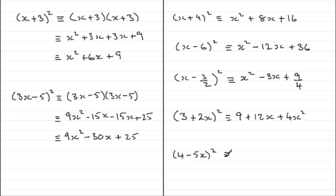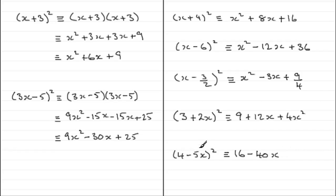And finally, 4 minus 5x all squared: 4 squared is 16; the product is minus 20x, doubled gives minus 40x; and the last term squared, minus 5x times minus 5x, is plus 25x squared.